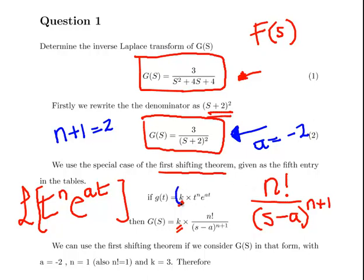This is why I tend to bring in these scaling constants here. But for the time being, what I'm going to say is, we're going to consider our given function in that form. So a is going to be minus 2, n is going to be 1, and also n factorial is going to be 1. Now in this particular instance, that's going to give us k is equal to 3.